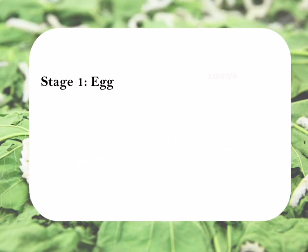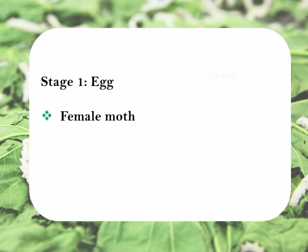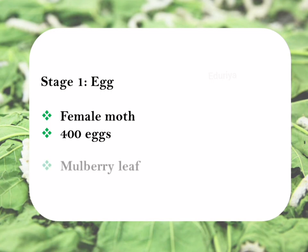Stage 1: Egg. On a summer day, a female moth lays about 400 eggs on a mulberry leaf at a time.